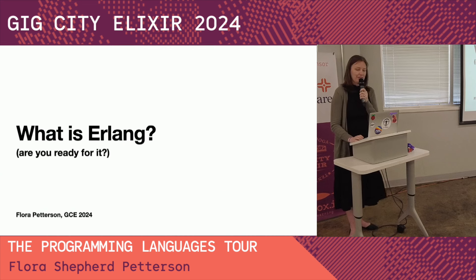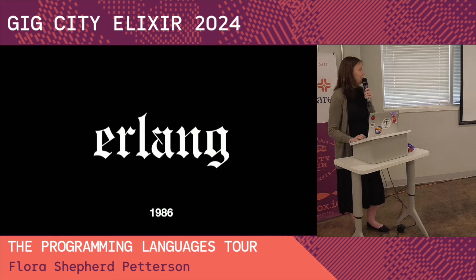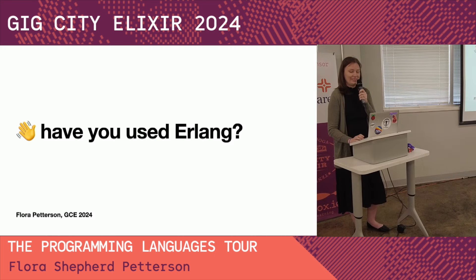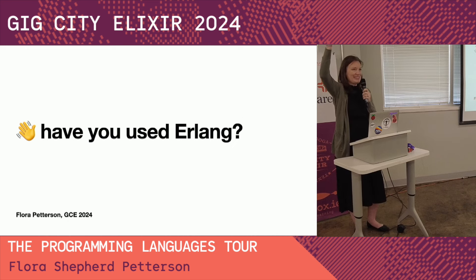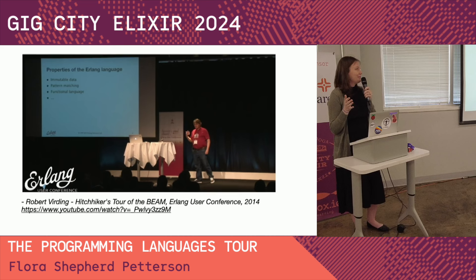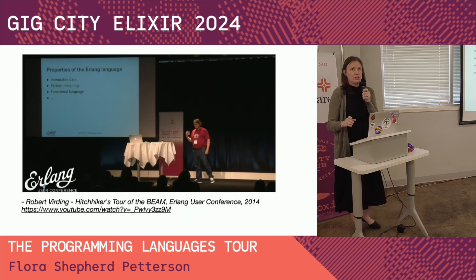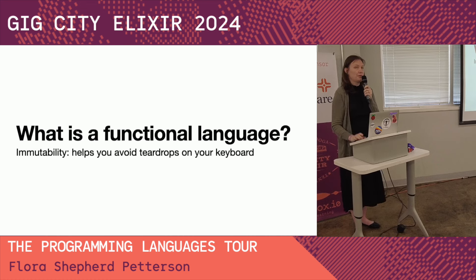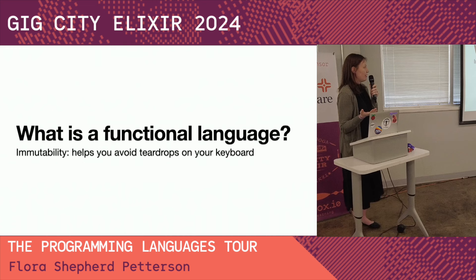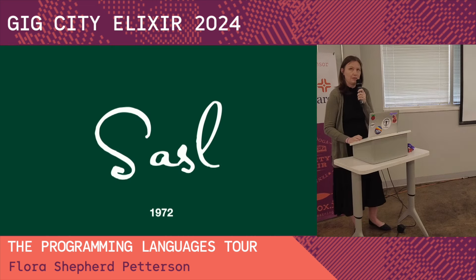So what is Erlang? Robert Virding, in a 2014 talk, discusses the facts of Erlang — the language features that are most important — which he says are immutable data and pattern matching. But all functional languages have that. So what is a functional language? Something that makes you a little happier, avoids some teardrops on your keyboard. So let's start with SASL.